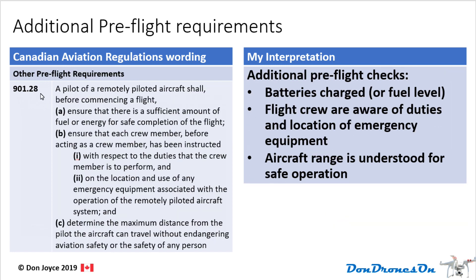The next ruling is 901.28, cleverly called Other Pre-Flight Requirements. It mentions additional pre-flight checks to make, including whether your batteries are charged, or in the event of an RCA airplane operating with fuel, make sure your fuel level is appropriate for your flight. Make sure that the flight crew are aware of their duties and the location of emergency equipment. Ensure that your aircraft range is understood for safe operation — if your aircraft is suitable for, say, 200 meters and you intend to go to something 400 meters away, that doesn't sound like a safe idea.